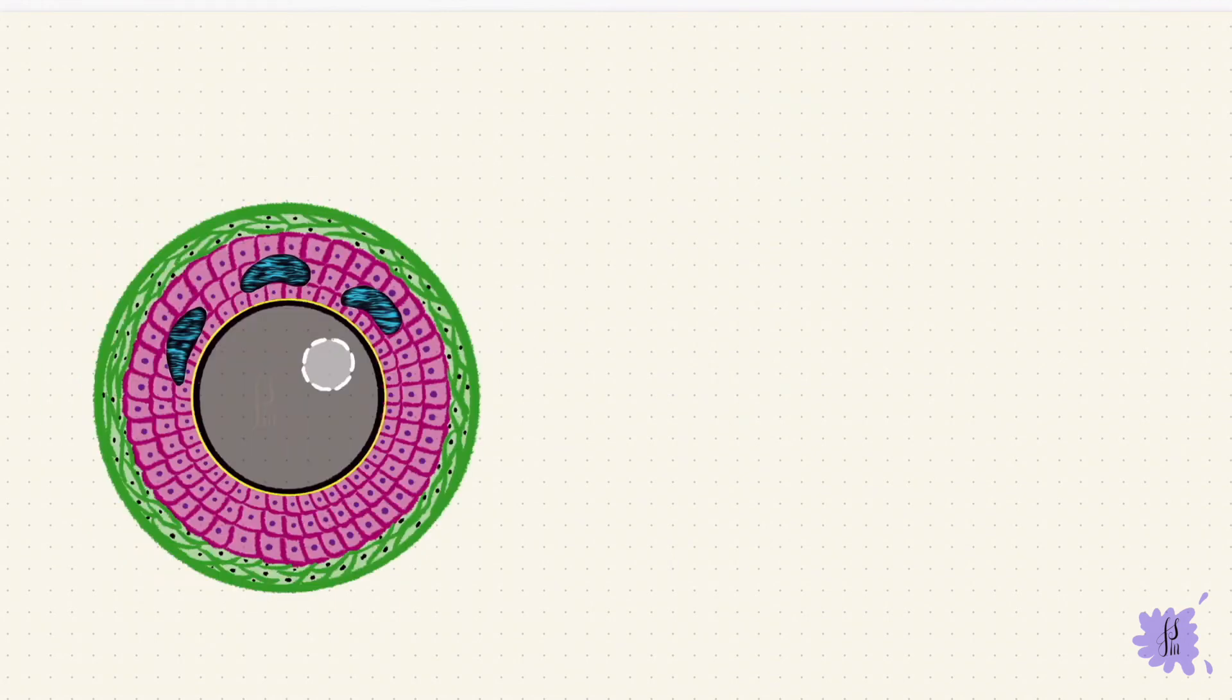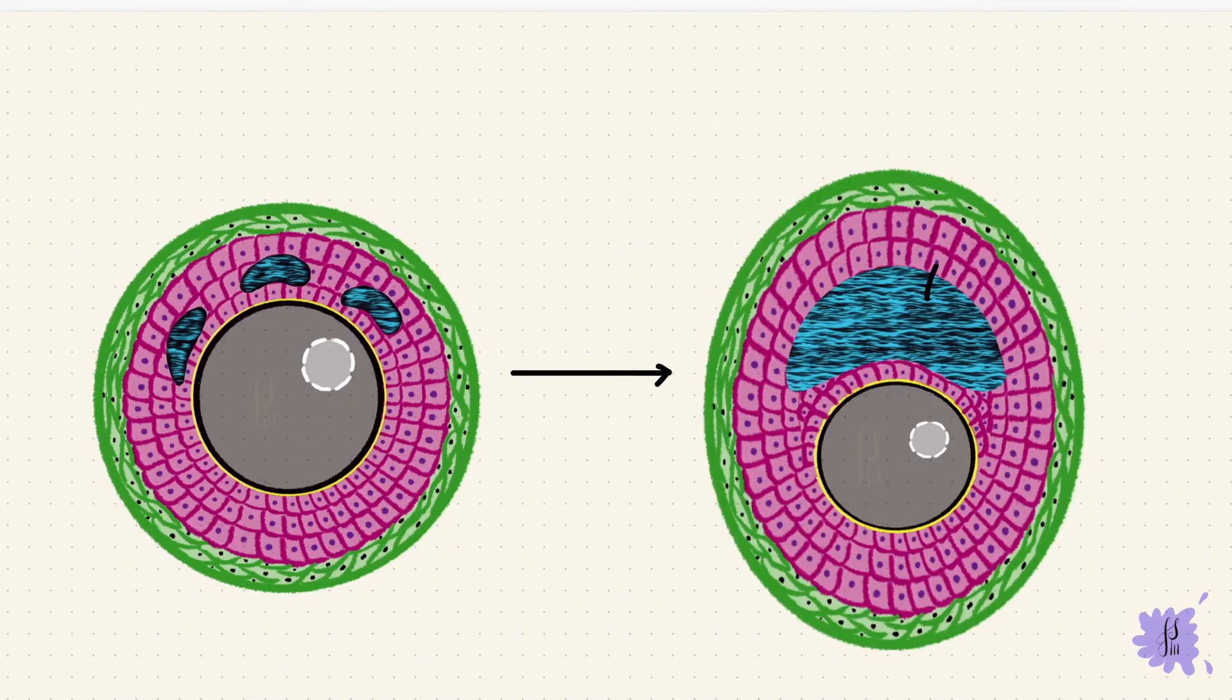The granulosa cells form follicular fluid. So it forms spaces filled with fluid inside the follicle. These join together to form an antrum. So this is the antral follicle. Not all of the follicles are going to mature enough to ovulate. From a handful that are growing, only one dominates. The rest undergo atresia. That dominant follicle, it grows.